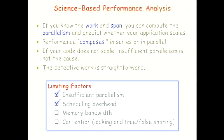This simple theory is very powerful. It permits science-based performance analysis: if you know the work and span, you can compute parallelism and predict whether your application scales. Performance composes — when you call something as a subroutine you can compose the work and span whether in series or in parallel. If your code does not scale, you know insufficient parallelism isn't the cause and can do detective work to find what does matter. The CilkView tool, for example, will diagnose insufficient parallelism and scheduling overhead.